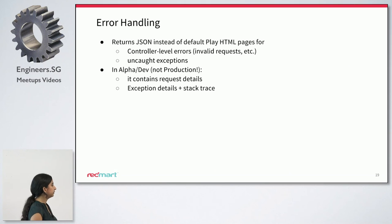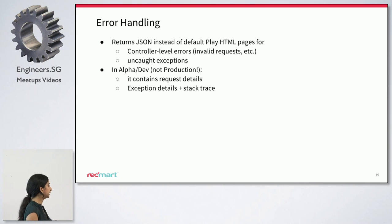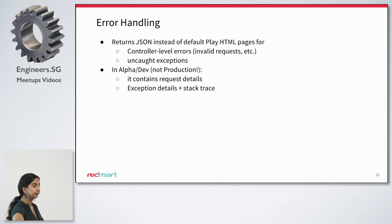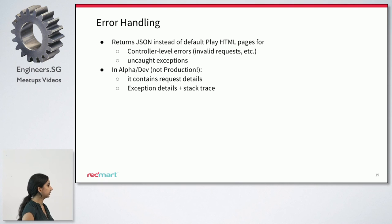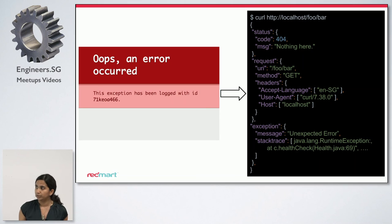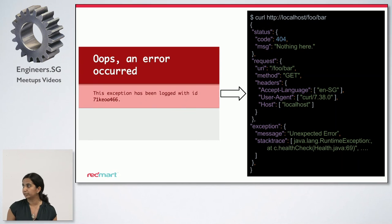With the microservice library, we have also changed the way we do error handling. By default, the Play framework returns HTML errors, but those are not really useful for us since most of our clients do their own UI rendering. So what the microservice library does is replace all the HTML errors with JSON errors. On an alpha or a staging environment, it also includes details about the actual exceptions as well as the stack trace, which can be really useful when you want to debug issues. So just an example of how it would have looked before — you basically have no idea what's happening. But with the JSON format, you get to see what the request was, what the headers were, and what the actual stack trace of the exception was.